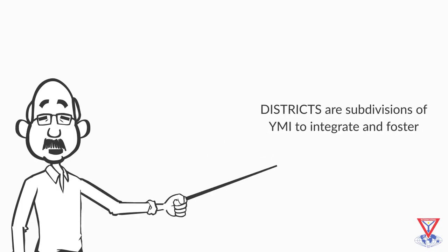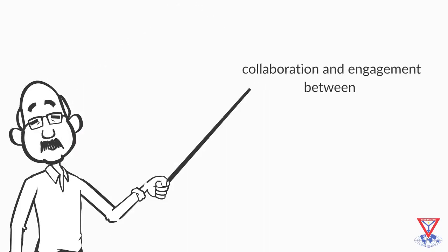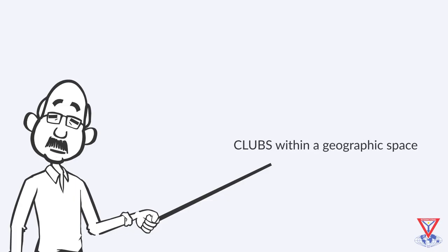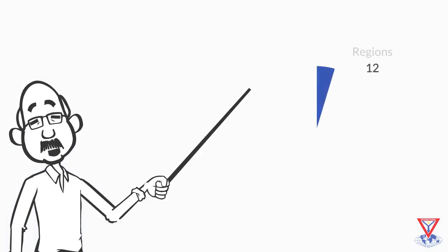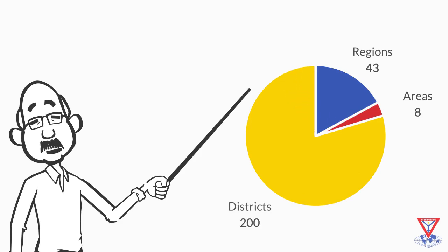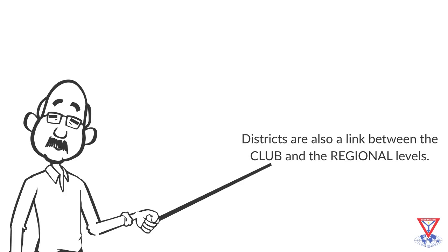Districts are sub-divisions of YRMI to integrate and foster collaboration and engagement between clubs within a geographic space. In 2020, there are 43 regions within 8 areas and about 200 districts. Districts are also a link between the club and the regional level.